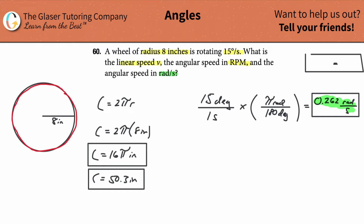For the exact answer, simplify 15/180 by dividing both by 5, giving 3/36, and then simplifying again — 3 goes into 36 twelve times — yielding 1/12. So the exact answer is π/12, or equivalently (1/12)π radians per second. Either the decimal 0.262 or the exact form π/12 is acceptable.